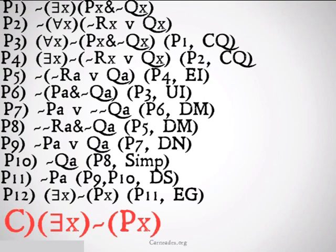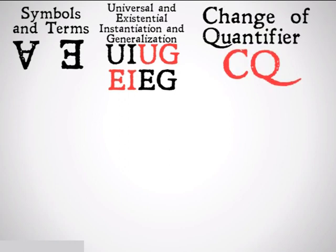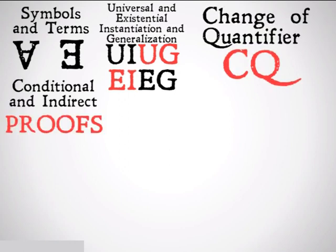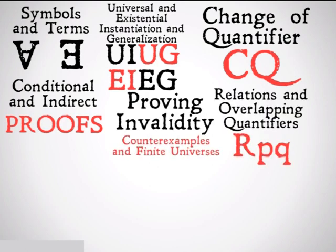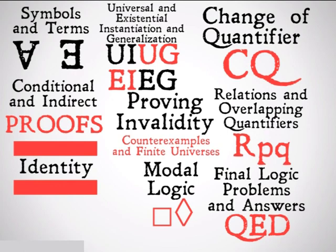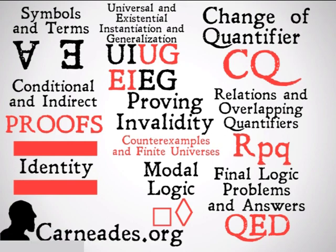If you didn't follow that, watch the video again, or more specifically watch the videos on existential instantiation, existential generalization, universal instantiation, and universal generalization. We're going to be doing as many of these problems as possible to get you used to these rules. Next up, we'll be looking at conditional and indirect proofs, proving invalidity, relations and overlapping quantifiers, identity, modal logic, and some final logic problems. Watch a new video every single day for 100 days at carnades.org, and stay skeptical, everybody.